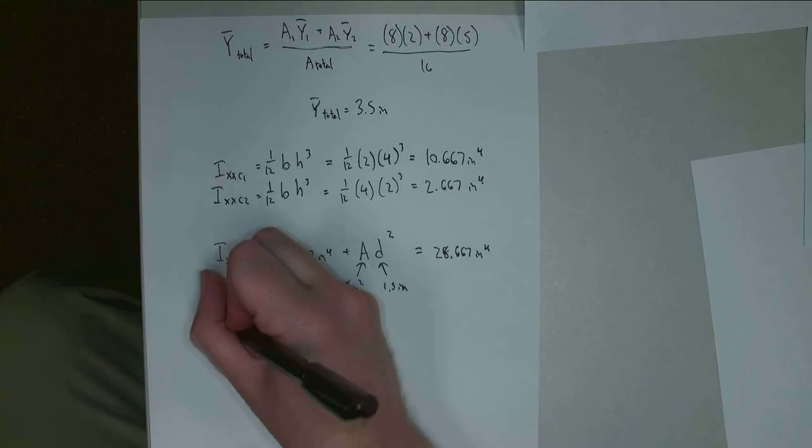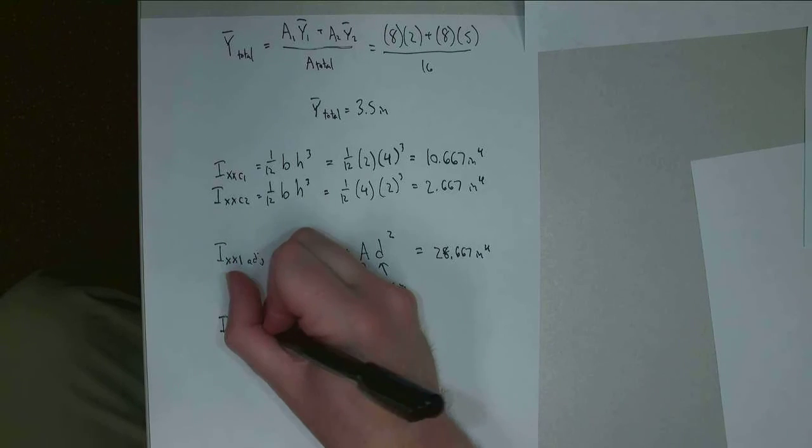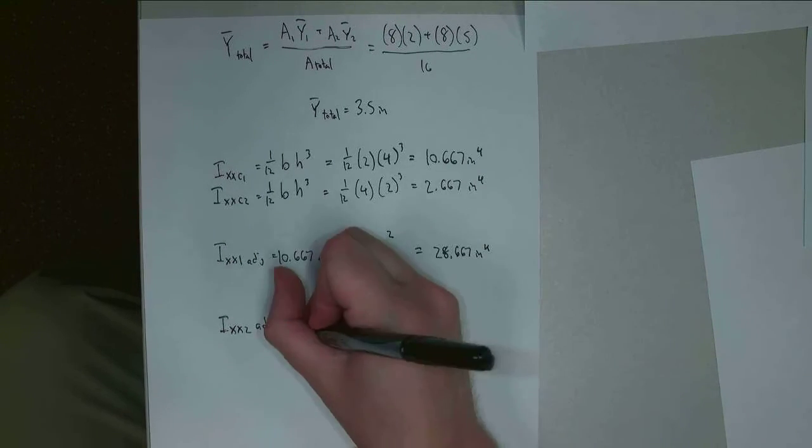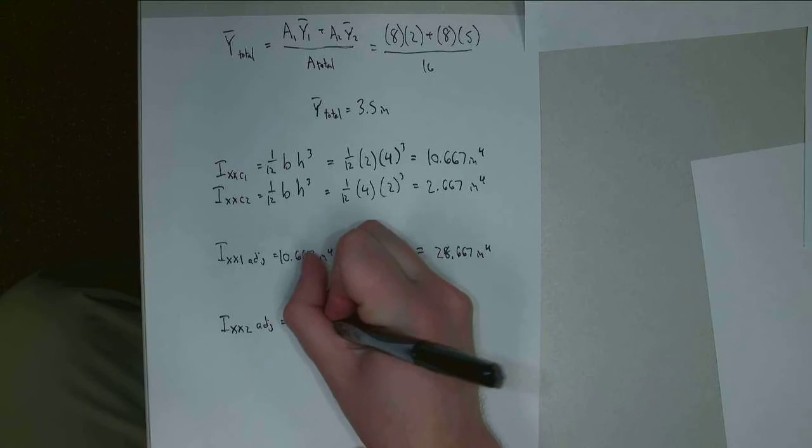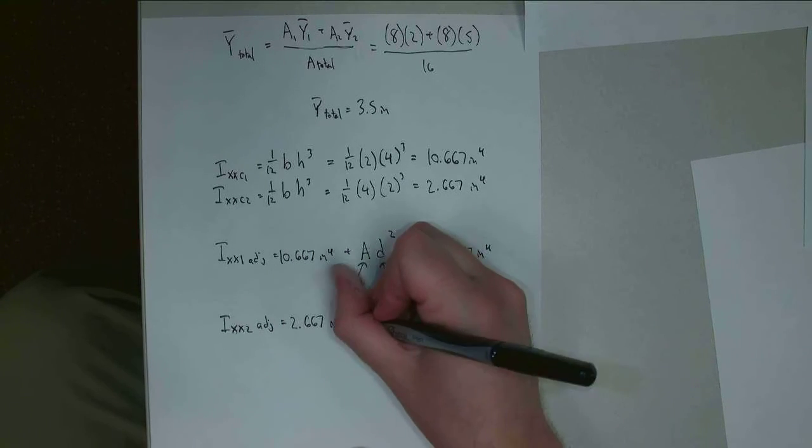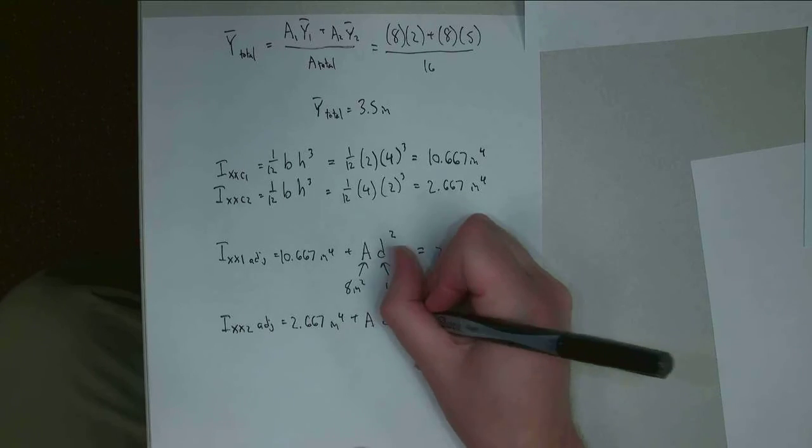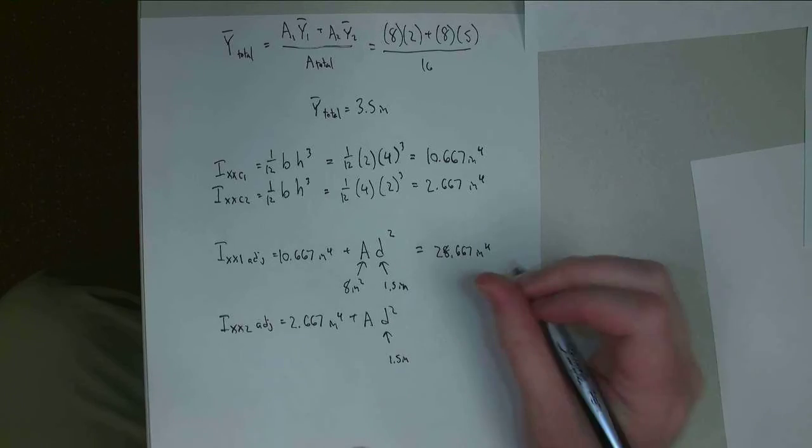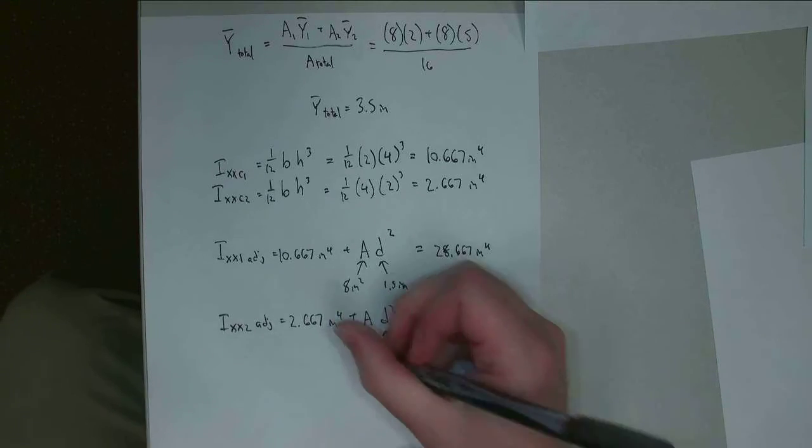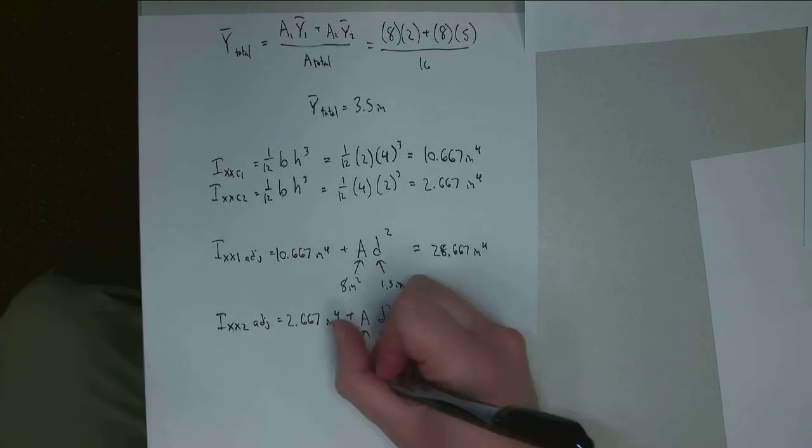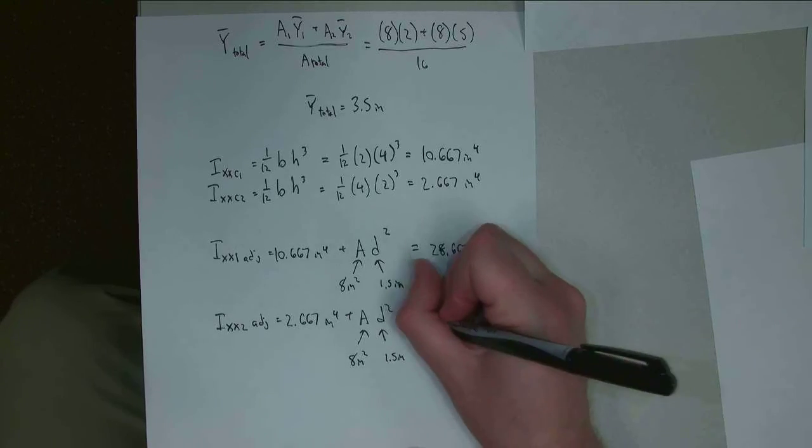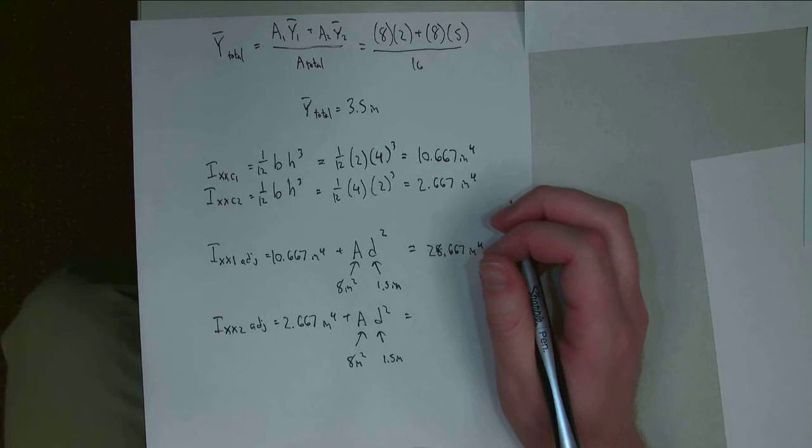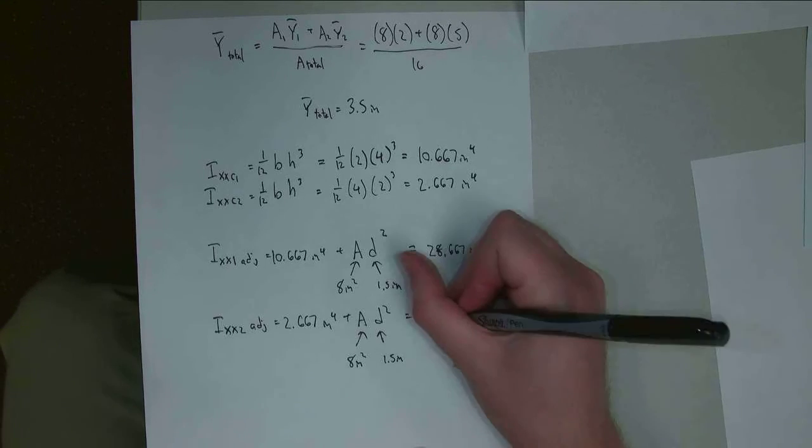I'm going to do the same thing for part 2. And so this one I start with 2.667 inches to the 4th. I'm adding on A times D squared. This D is the distance between the axes of 1.5 inches, or the R we had in our table. And the area is also 8 inches squared. So I plug in those values. And for this one, I'm going to wind up with 20.667 inches to the 4th.